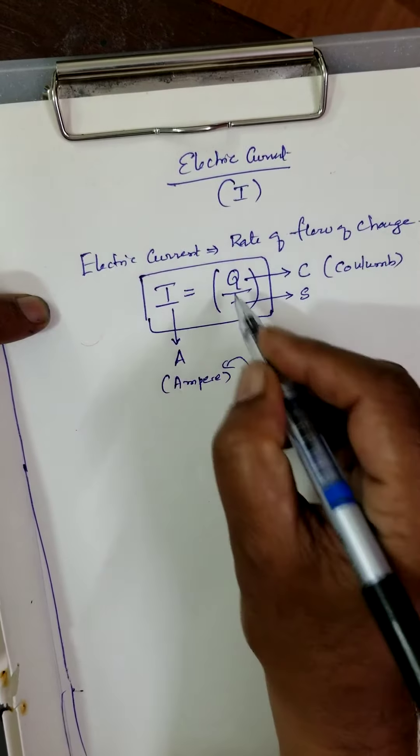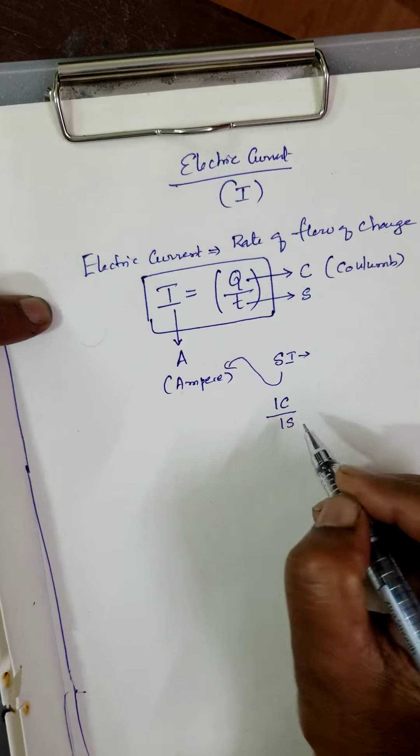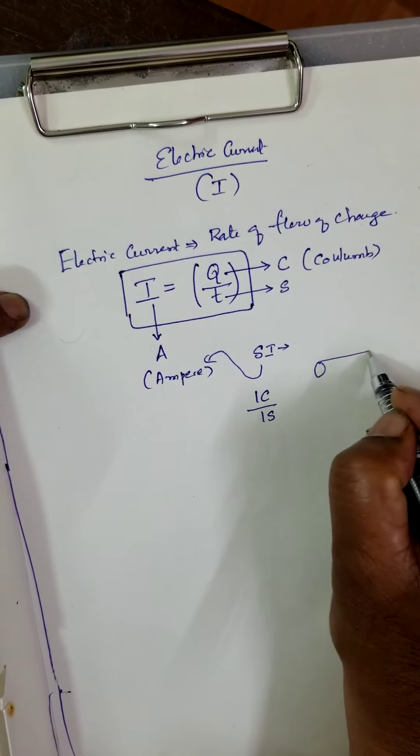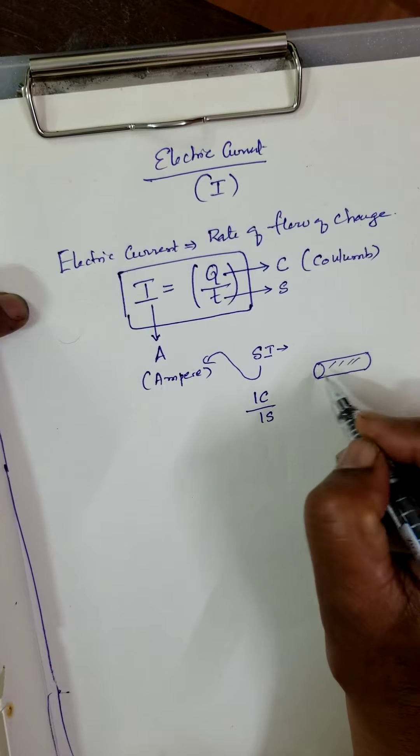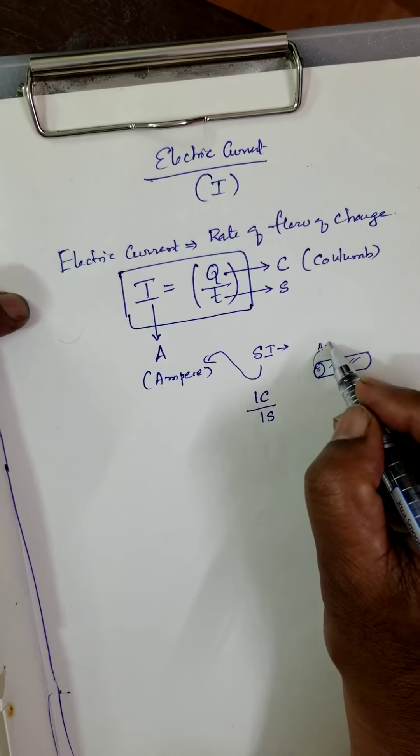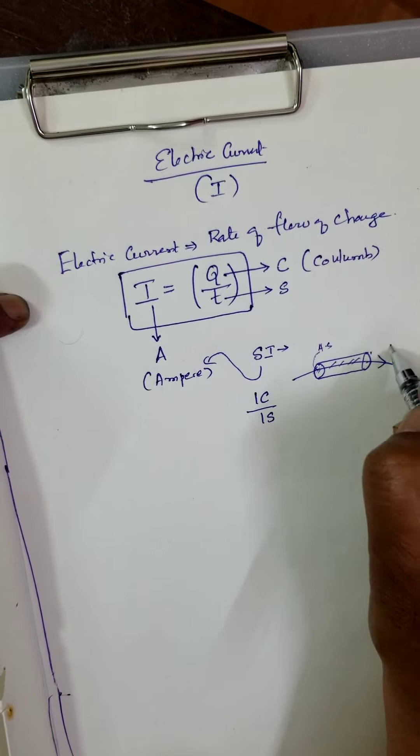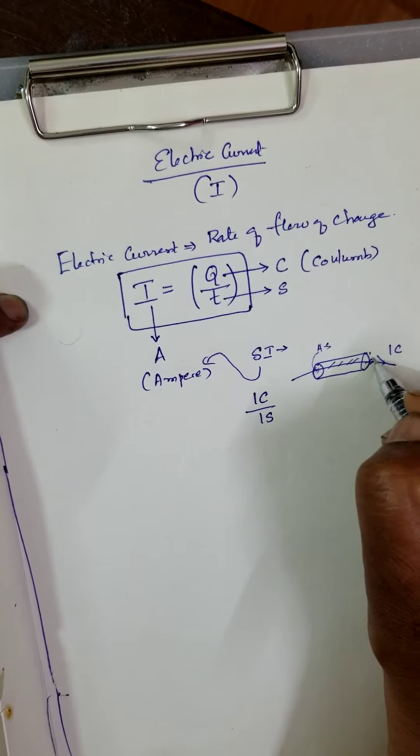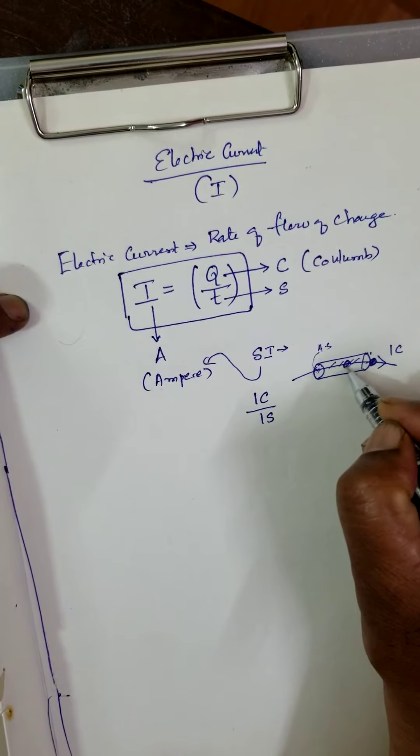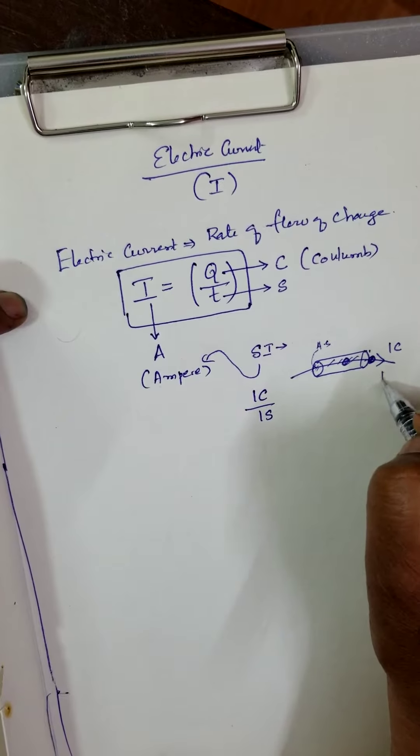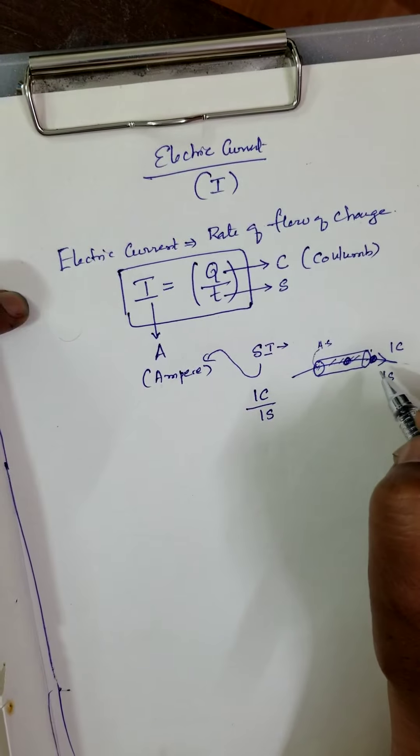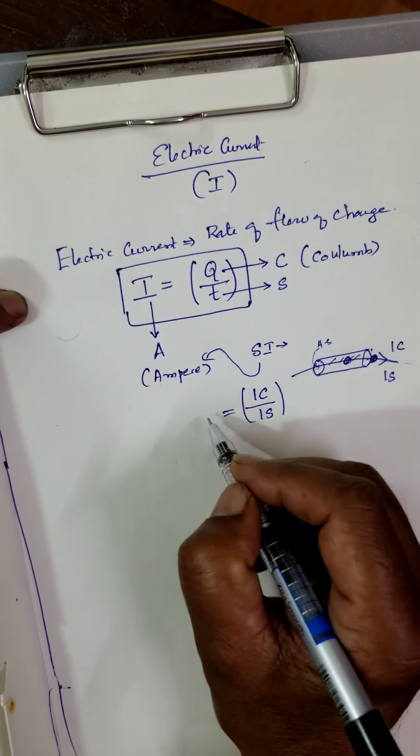Suppose one coulomb of charge flows in one second. Suppose this is a conductor, a metallic conductor. This is the area of cross section. In one second, one coulomb of charge flows. One coulomb of charge flows in one second and comes out.